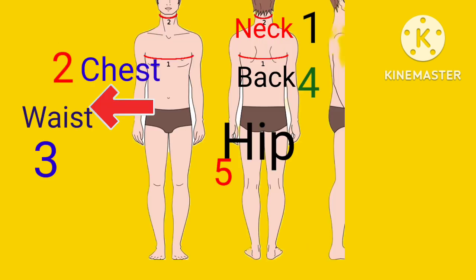Main body parts. First: Neck. N-E-C-K. Neck. Number two: Chest. C-H-E-S-T. Chest. Number three: Waist. W-A-I-S-T. Waist. Number four: Back. B-A-C-K. Back. Number five: Hips. H-I-P. Hips.